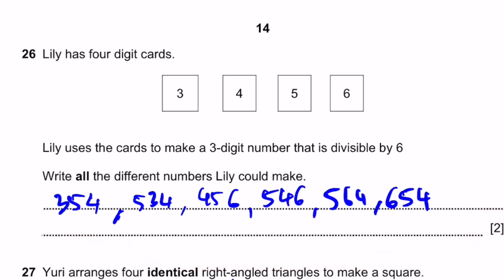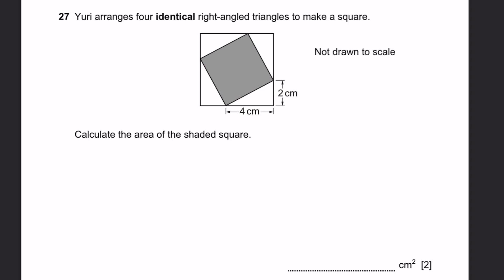Question 27. Yuri arranges four identical right-angled triangles to make a square. Calculate the area of the shaded square. So if these four triangles are identical, that means this is 2cm, this is 4cm, and then like this for the other two as well. So that means the full side length of the square is 6cm. So the area of the shaded square is going to be the area of the huge square minus the area of the four triangles, which are all the same or identical.